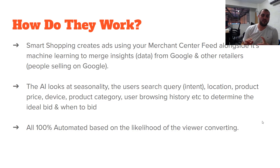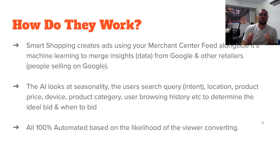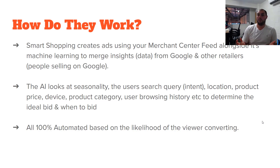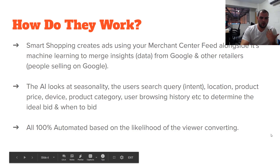There are so many data points the AI looks at: seasonality, search query intent — Google knows the person's intent based on what they're searching — location, product price, device, the category of products, and browsing history. So if someone is visiting a bunch of products in your space, Google knows they're in the market to buy, they're in a research phase, and it adjusts bids up and down based on that. It's 100% automated based on the likelihood of the viewer converting — that's the main crux of it.